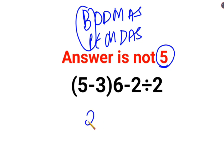So we have 5 minus 3 which is 2, and then there is no sign between this bracket and the 6. So it is basically multiplied by 6 minus 2 divided by 2. At this point, 2 multiplied by 6 is 12 minus 2 divided by 2.